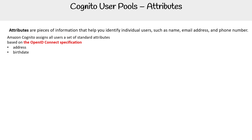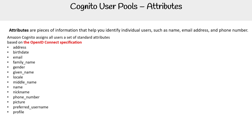We'll see things like address, birthday, birthdate, email, family name, gender, given name — you get the idea. The one that's unique here is 'sub', which is a unique identifier. It's required and set by Cognito.